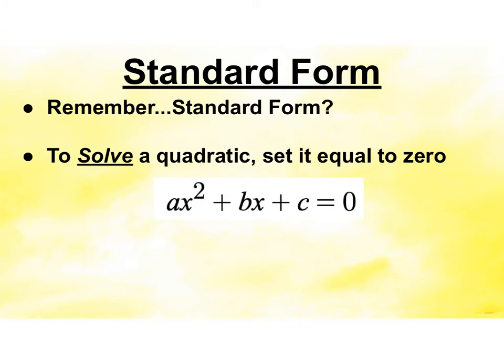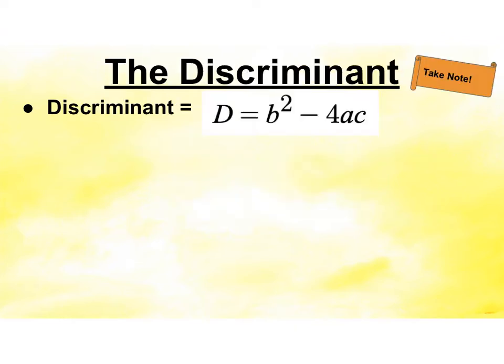Remember standard form when we were factoring. In order to solve a quadratic, we want it to be in standard form — our highest exponent first, which will be x squared for a quadratic, then x to the first, and then our constant. The discriminant — I'm going to use capital D — is b squared minus 4ac. You should write that down in your notes.